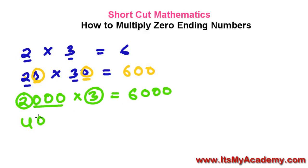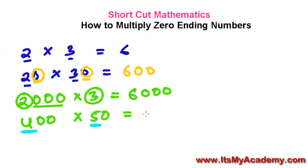Let's say here is 400 and here is 50. So what I'm going to do — again, I'm just going to multiply the front digits, 4 and 5, except the zeros. So 4 times 5 is 20, and then followed by 1, 2, 3 — three zeros. So it is 20,000.